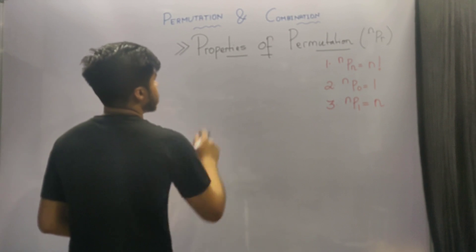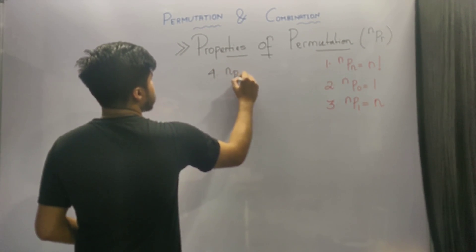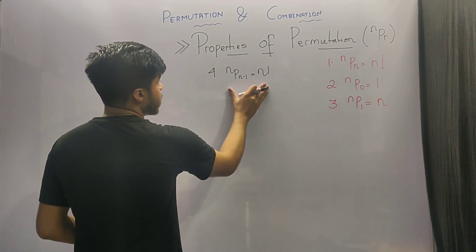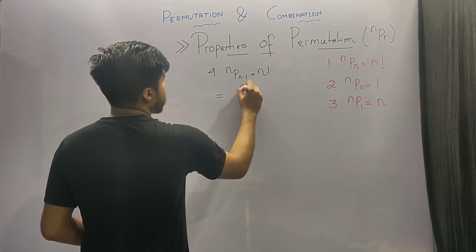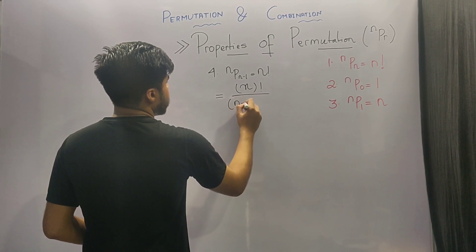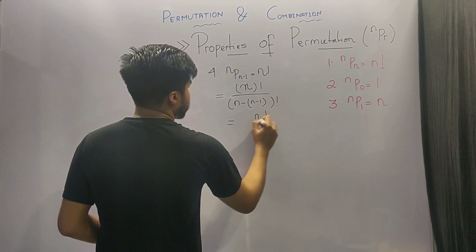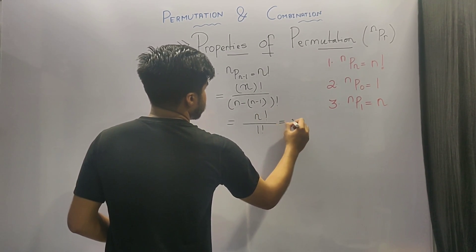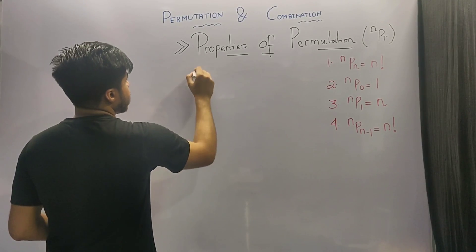The fourth property says that nP(n minus 1) is equal to n factorial. We can check this by putting it in the formula of nPr: n factorial upon n minus (n minus 1) factorial, which is equivalent to n factorial upon 1 factorial, which is equal to n factorial.